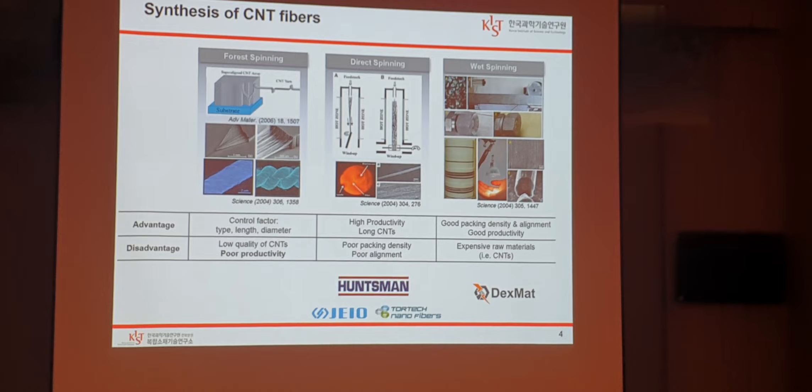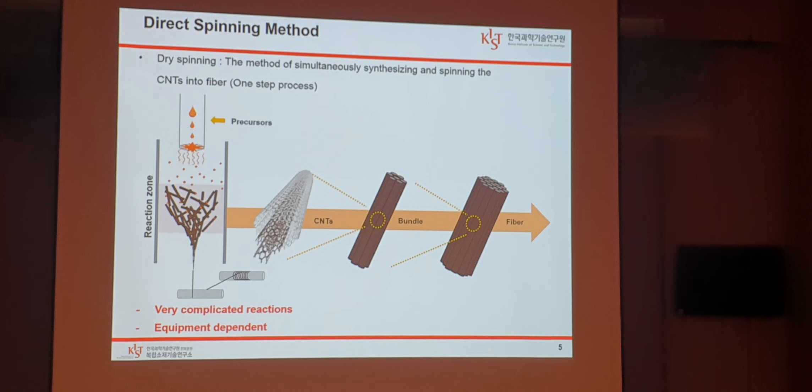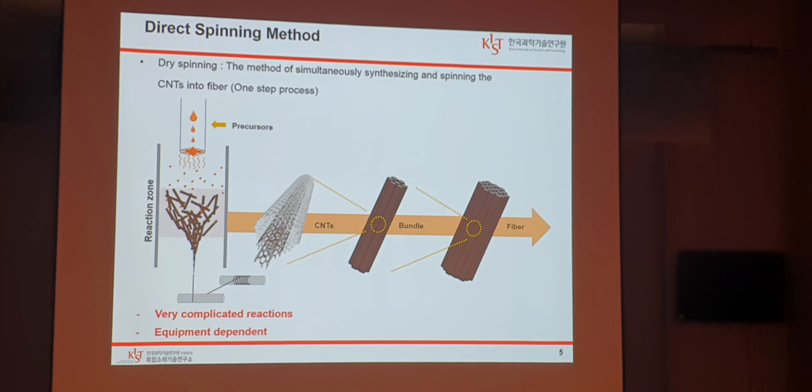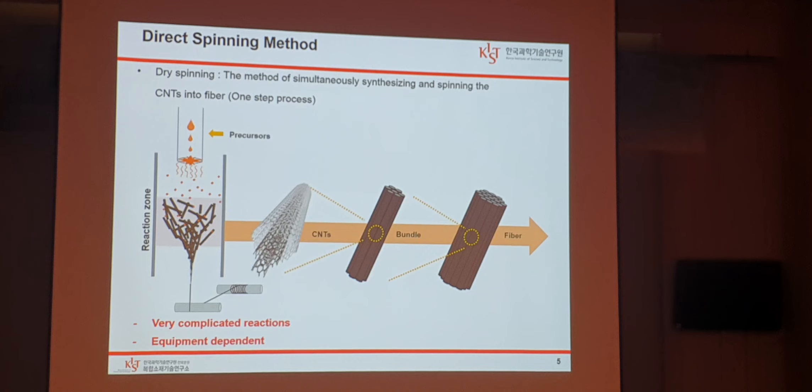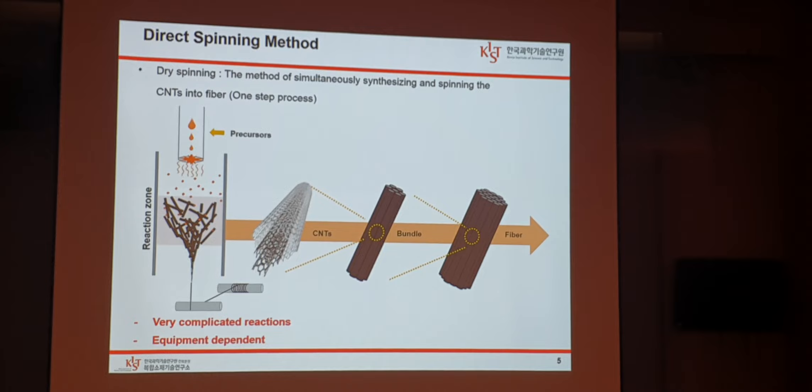Direct spinning is the method of simultaneously synthesizing and spinning CNTs into fiber. This one-step process seems a very economical way to produce fiber when carbon conversion is high. However, at the same time, it is very challenging to control the property and structure of the fiber because of very complicated reactions that occur within a few seconds.